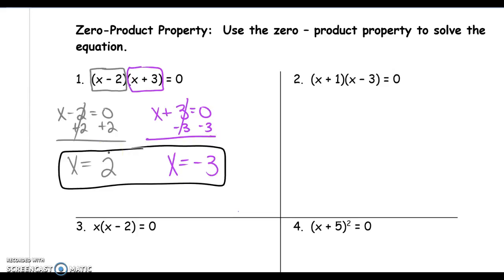If we plug 2 in, we get 2 minus 2, which is zero. It doesn't matter that the other factor equals 5, because 0 times 5 is 0. If we plug negative 3 in, negative 3 plus 3 is 0, and anything times 0 is 0. So we're looking for the numbers that will make this equation equal zero.